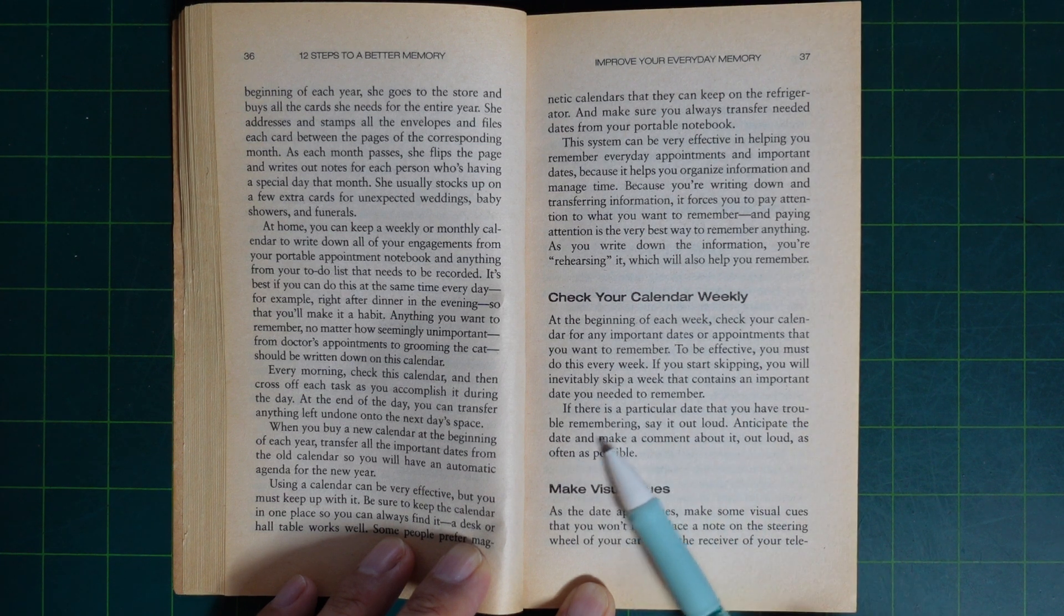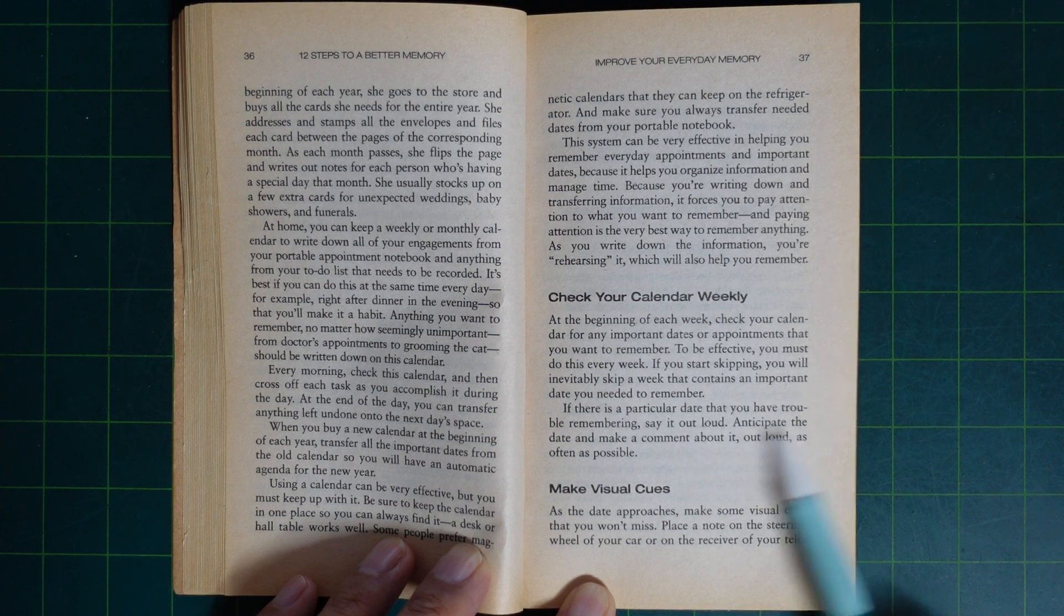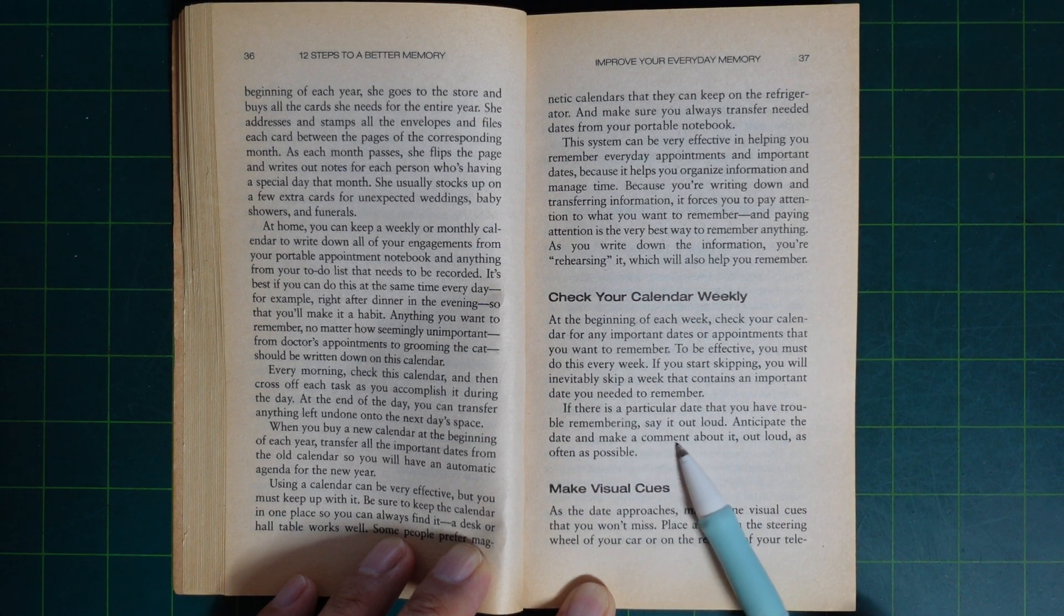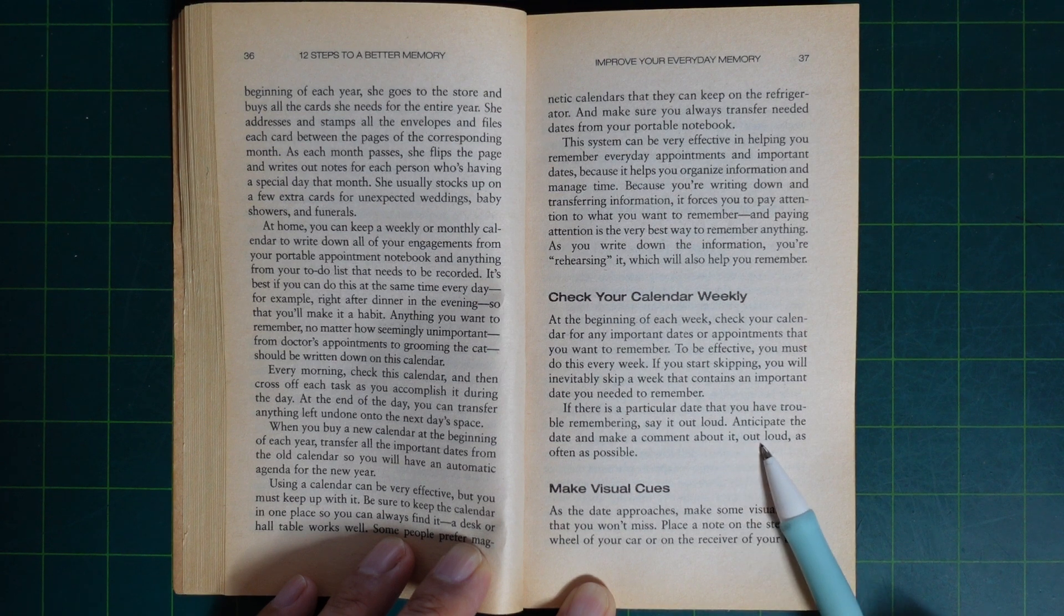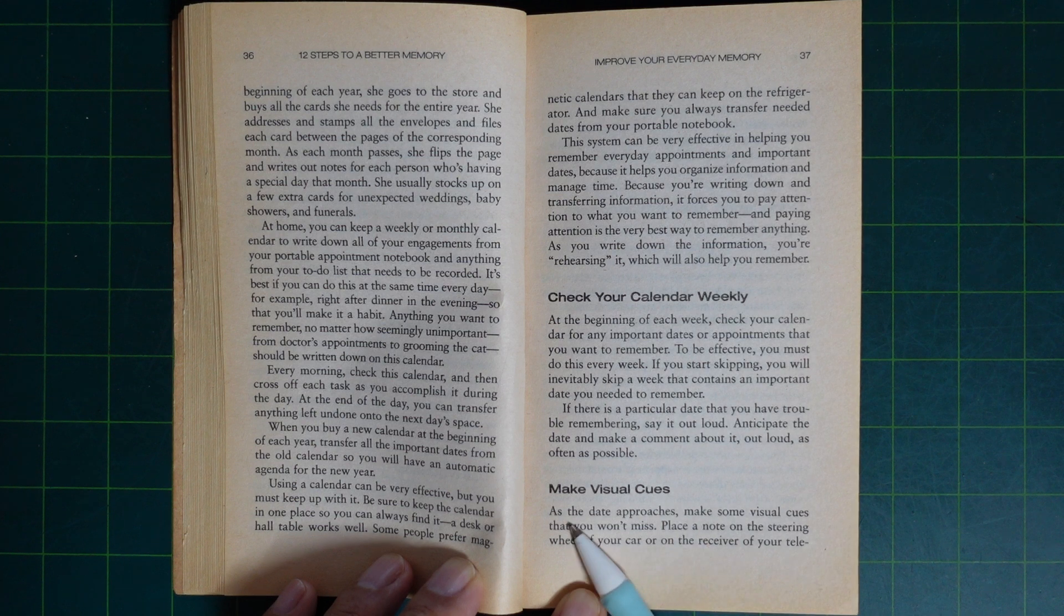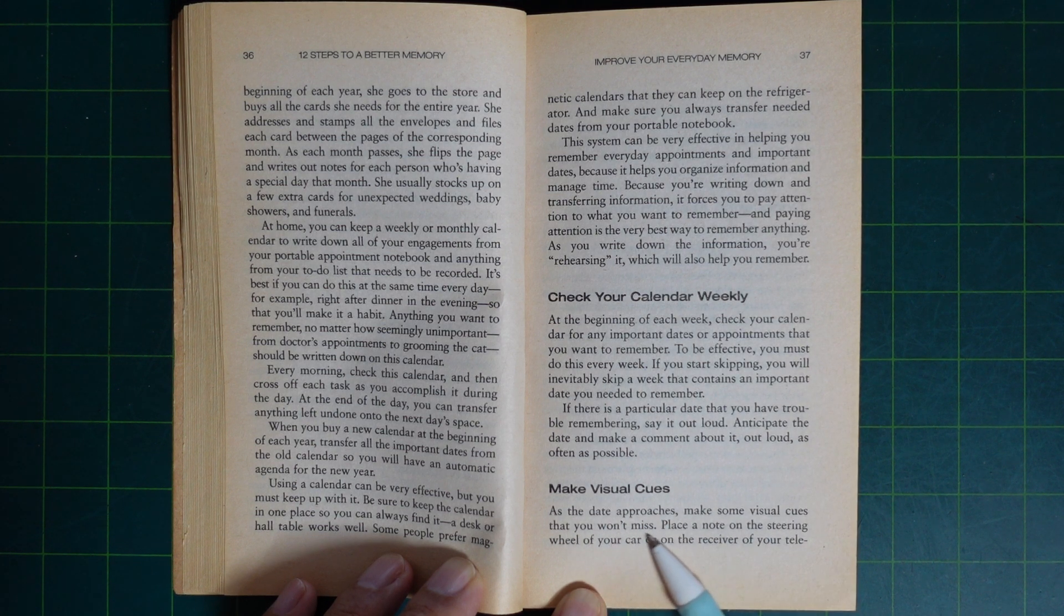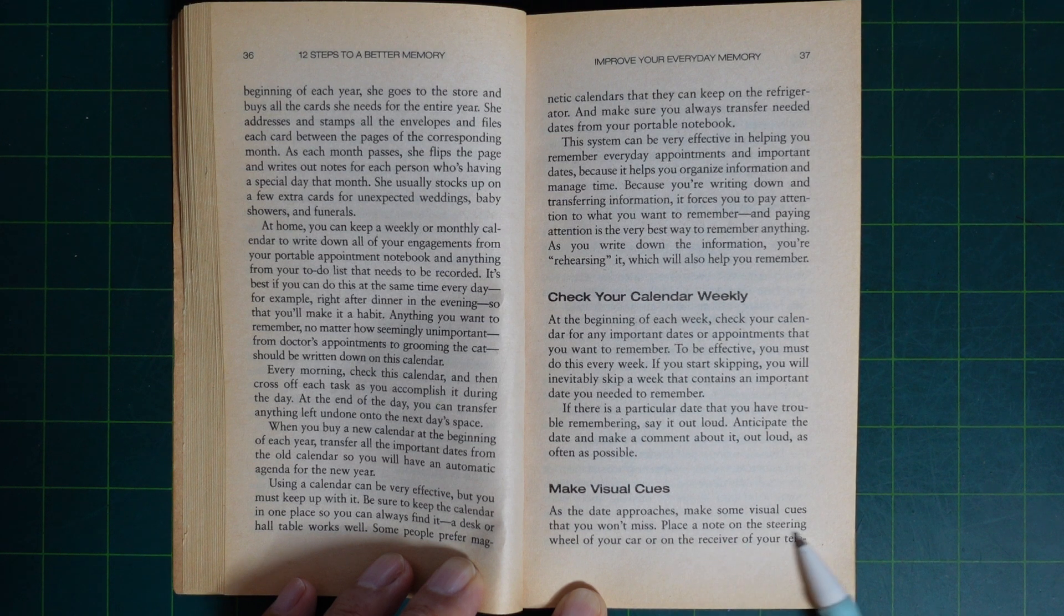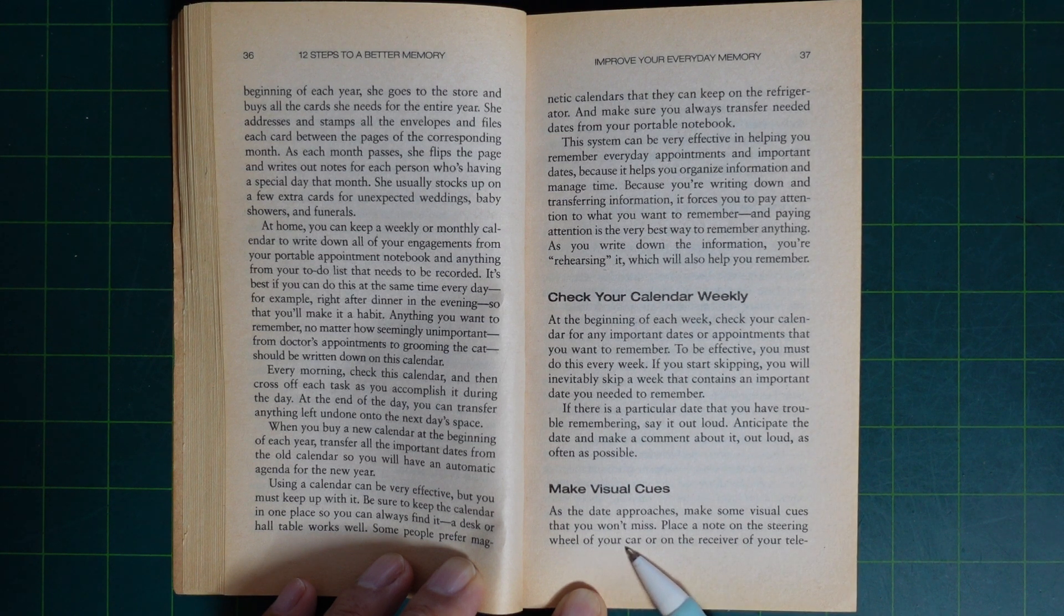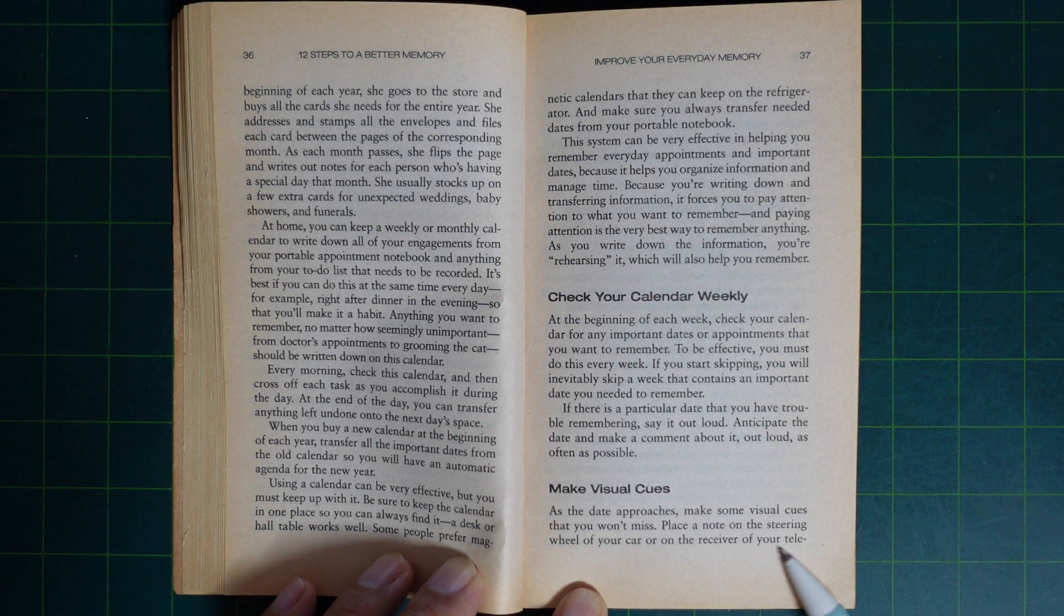Anticipate the date and make a comment about it out loud as often as possible. Make visible cues. As the date approaches, make some visible cues that you won't miss. Place a note on the steering wheel of your car or on the receiver of your telephone.